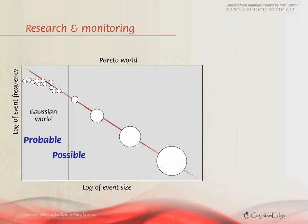The trouble is that experts become entrained. We can only assess probability based on what we understood from the past. As I move to the right, we're dealing with a huge range of events — or possible events — with only a small number of actual ones.